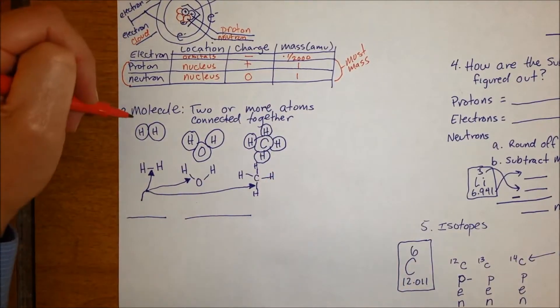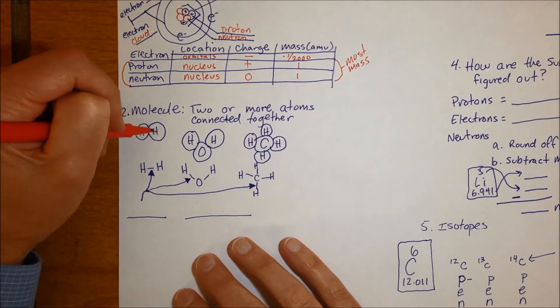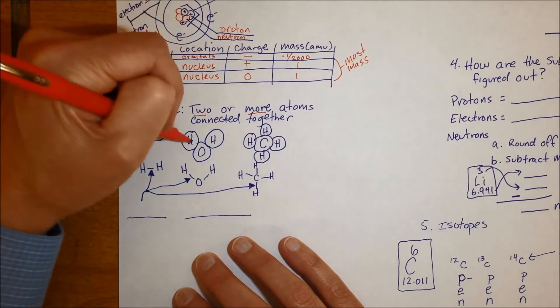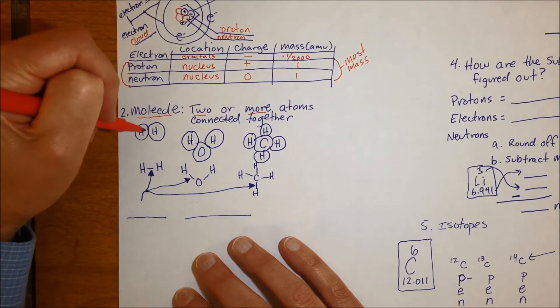Moving on, atoms stick together to form molecules. So if you have two hydrogen atoms, I kind of simplified the drawing, put an H in the middle where the nucleus is. Sticking together, that would be a molecule. Definition of a molecule is two or more atoms connected together. So this is a hydrogen molecule.